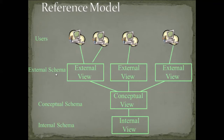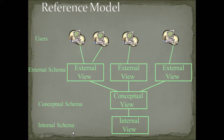Schema represents metadata — data about data. External schema or external view is the end user view. Conceptual schema means the overall database design or a subset of it. The last is internal schema, which represents how we store data.